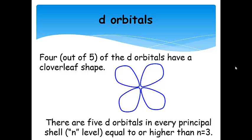There are five D orbitals for every principal shell, but it has to be equal to or higher than N equals 3. N equals 3 is the lowest principal shell that can have D orbitals. When we talk about quantum numbers, we're going to see why that is.